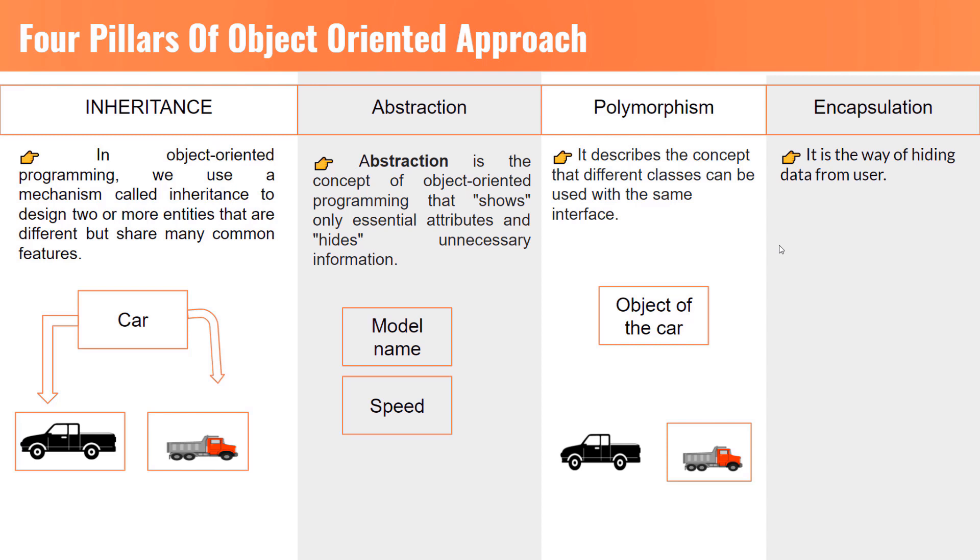The four main pillars of object-oriented approach serve two main purposes. Number one is to reduce the lines of the code and second is to make it more accessible while hiding the information as well as making private information.